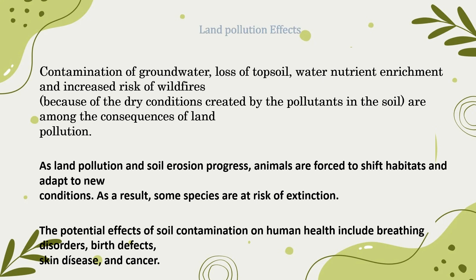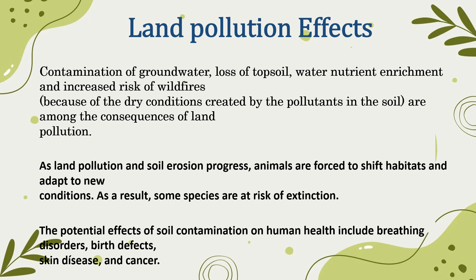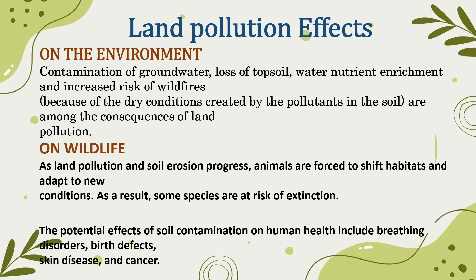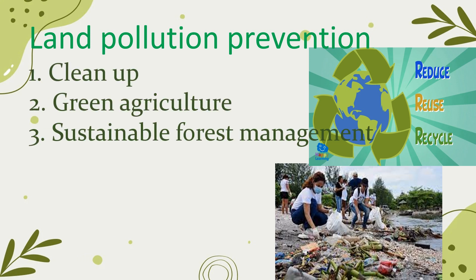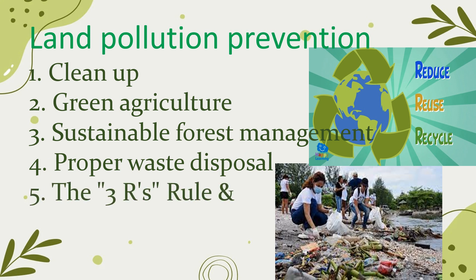Effects of land pollution are categorized in three types. On the environment: contamination of groundwater, loss of topsoil, water nutrient enrichment, and increased risk of wildfires due to dry conditions created by pollutants in the soil. On wildlife: as land pollution and soil erosion progress, animals are forced to shift habitats and adapt to new conditions, and some species are at risk of extinction. On human health: potential effects include breathing disorders, birth defects, skin diseases, and cancer. Prevention methods include clean-up, green agriculture, sustainable forest management, proper waste disposal, and the three R's rule and education.